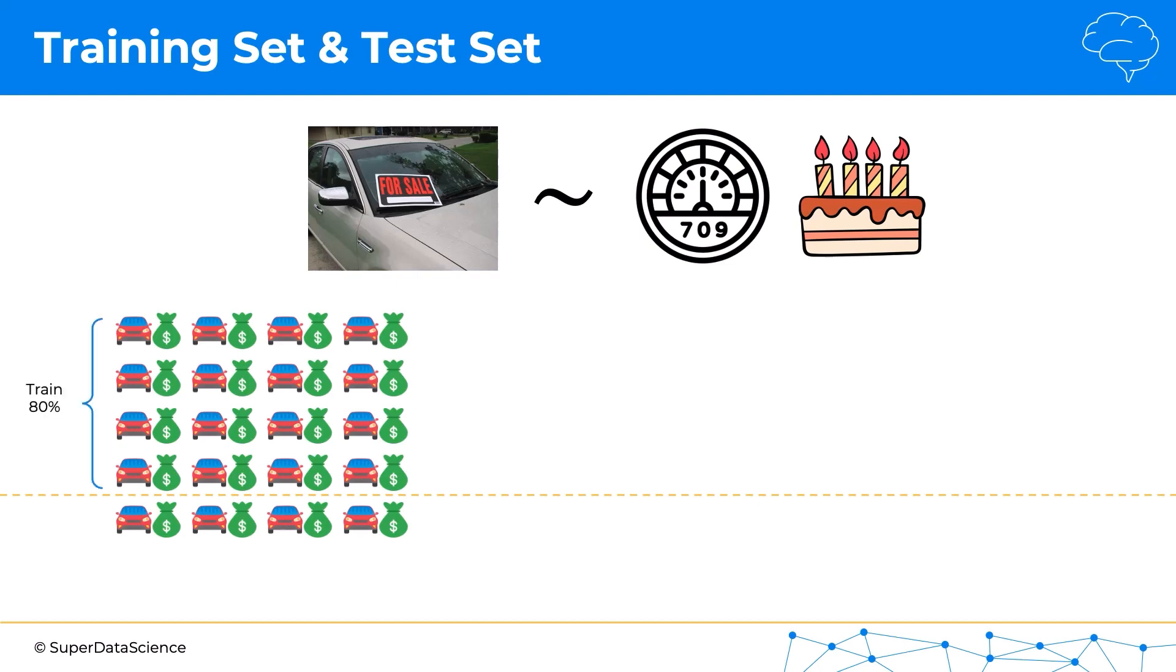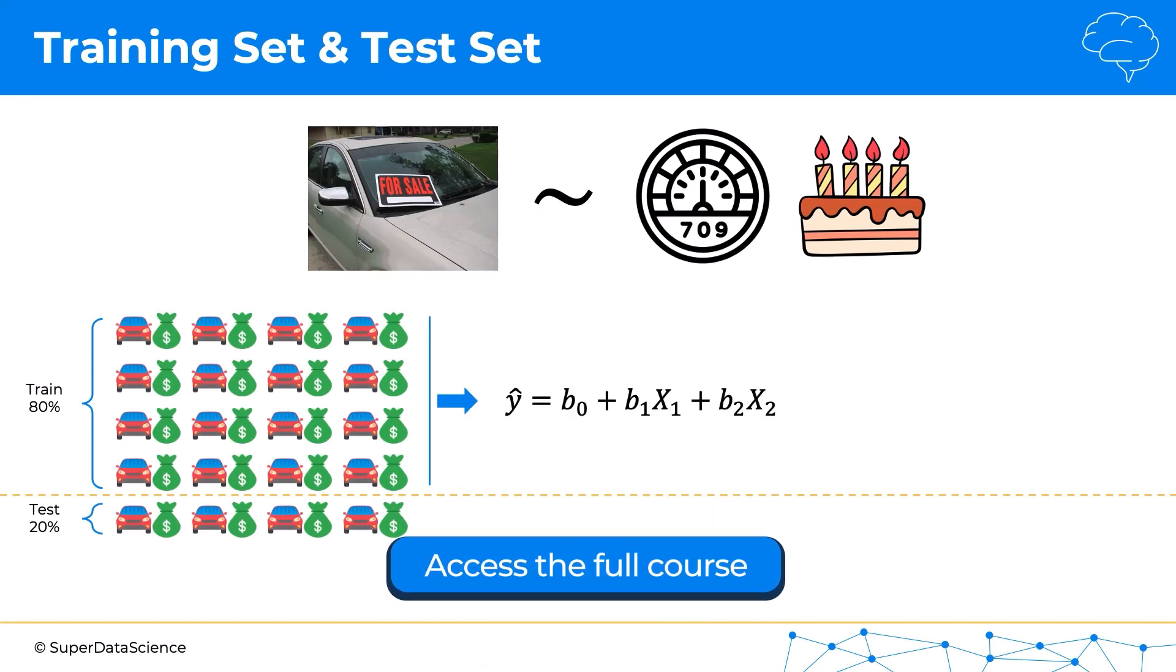So what that means is that the bulk of our data, 80%, will be our training set and separated 20% will be our test set. We'll use our training set to build the model, so in this case we're building a linear regression.